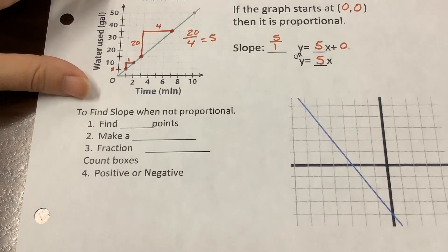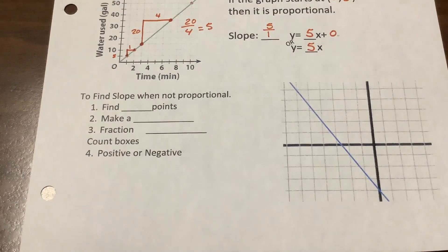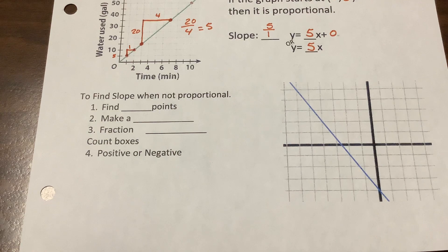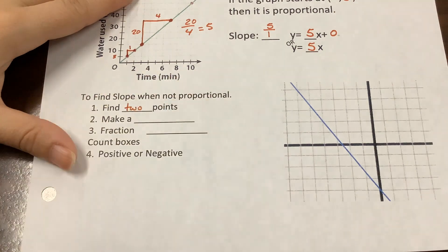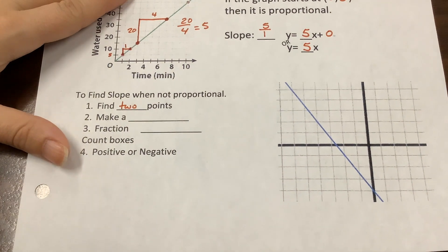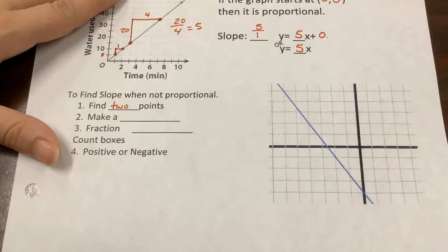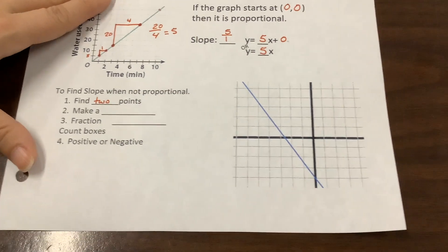All right. Looking at this bottom half. To find slope when it's not proportional. Okay? So, you need to find two points. Find two points on the graph, and I mean whole number of points. Just like when we were counting, looking at graphs and trying to find the unit rate.